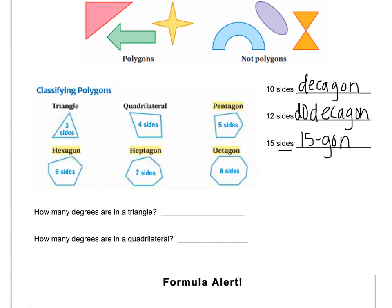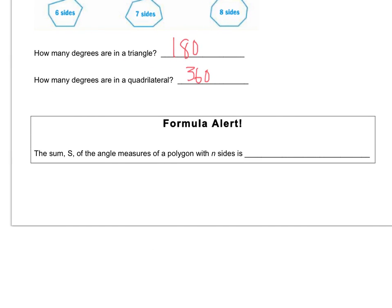Just as a quick quiz — how many degrees are in a triangle? Good, 180. How many degrees are there in a quadrilateral? Excellent, 360. There's a formula you can use to determine the number of degrees in any figure, any number of sides.